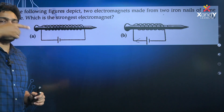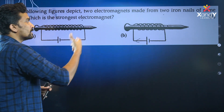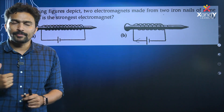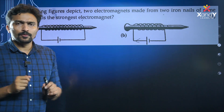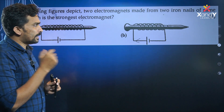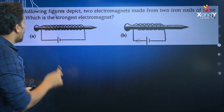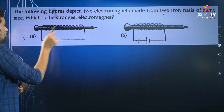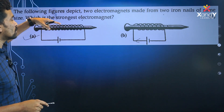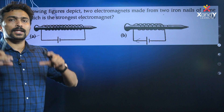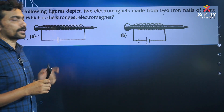The number of turns is a factor. In this method, the piece of iron nail is also the electromagnetic power. This is the correct answer, because the number of turns makes a strong magnet.